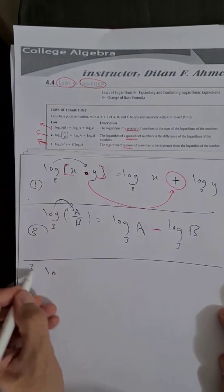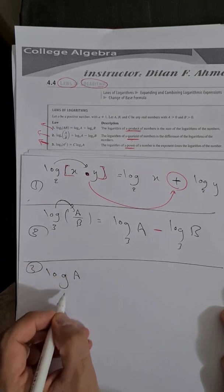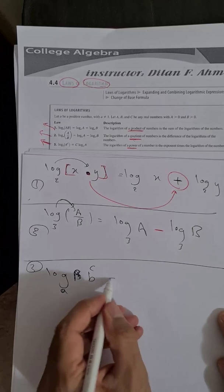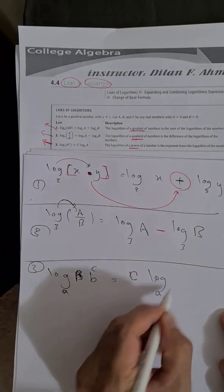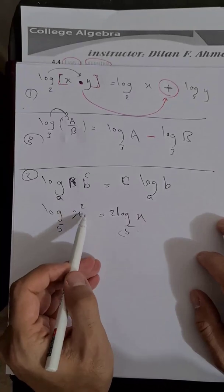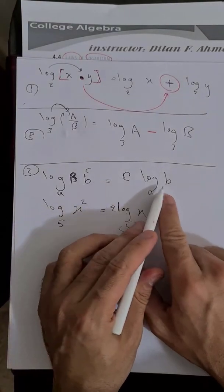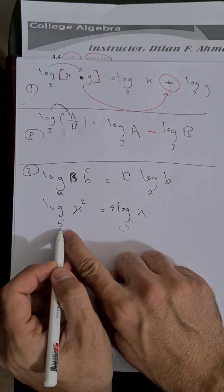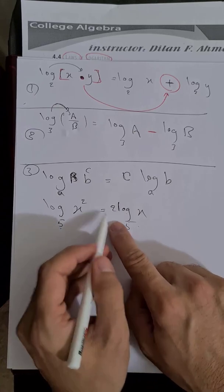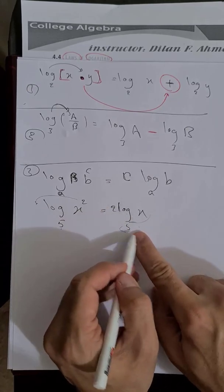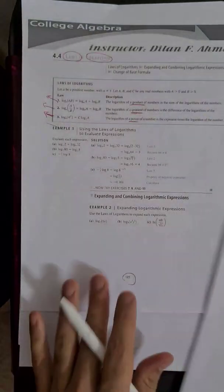For the third law, we have the power rule. For example, if we have log of a^c, I can say this equals c·log(a). What does that mean? For example, if I have log base 5 of x², I can bring the power 2 down and get 2·log₅(x). That is the power rule.